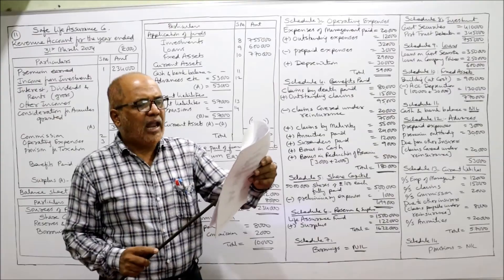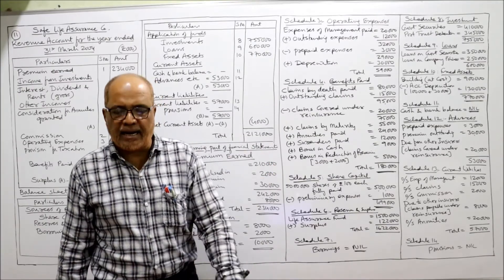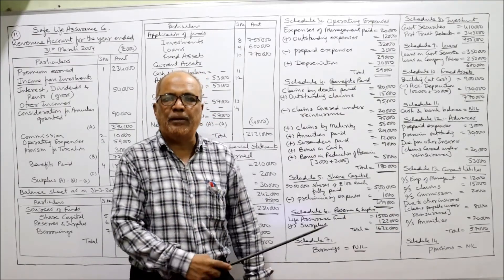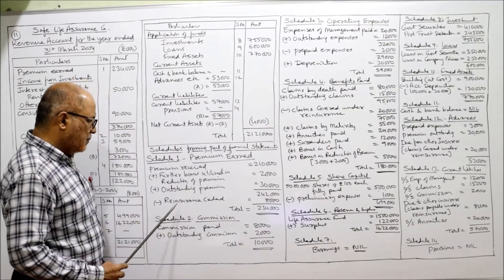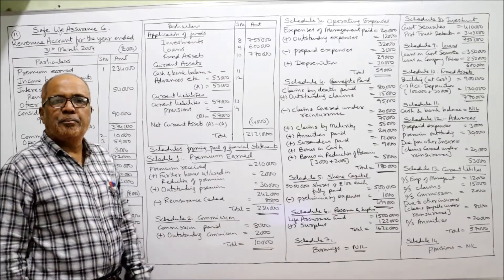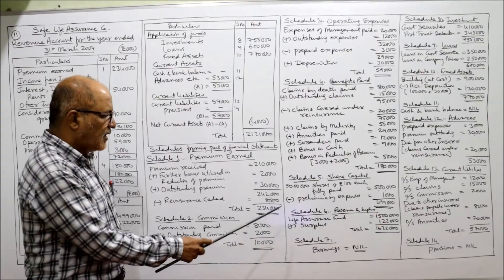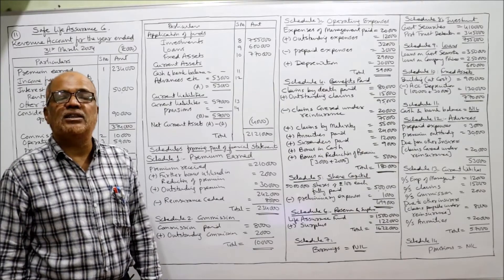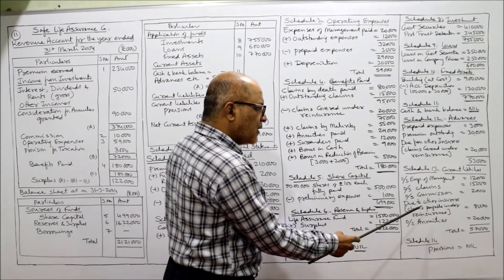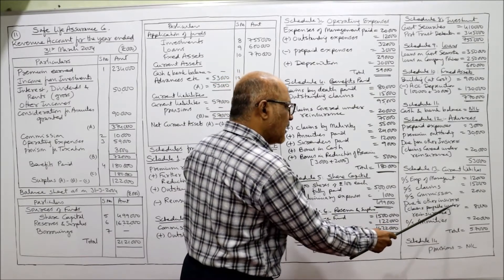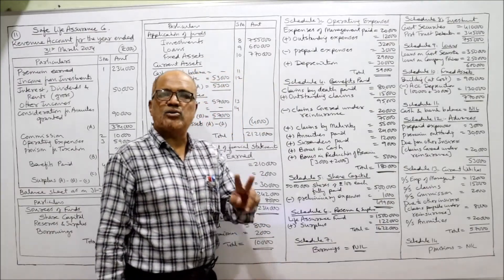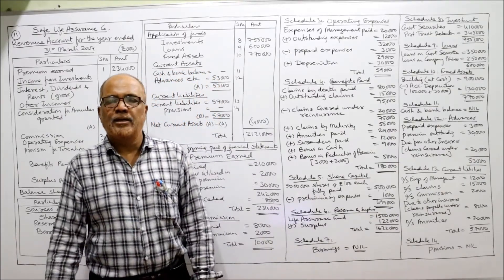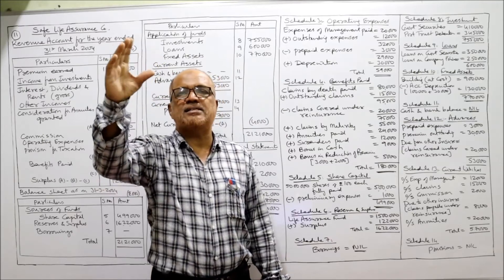Adjustment 8: premium payable under reinsurance — 8,000. First, it is deducted from premium in Schedule 1 as 'reinsurance ceded 8,000.' Second, that 8,000 is shown in Schedule 13, current liabilities, as 'premium due to other insurers — claims payable under reinsurance 8,000.' That covers all trial balance items and all six adjustments.